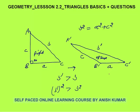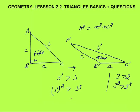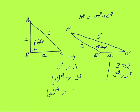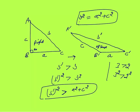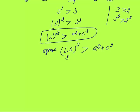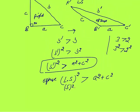B dash squared will also be greater than B squared — just as if 3 is greater than 2, then 3 squared is always greater than 2 squared. So B dash squared is greater than B squared, which means B dash squared is greater than A squared plus C squared. In an obtuse angle triangle, the square of the largest side is always greater than the sum of squares of the other two sides. In a right angle triangle it is equal — the largest side squared equals the sum of squares of the other two sides.